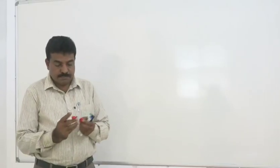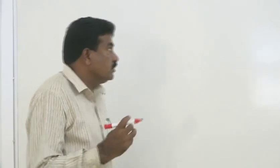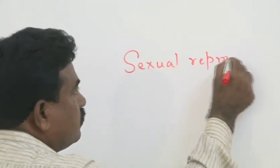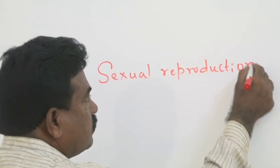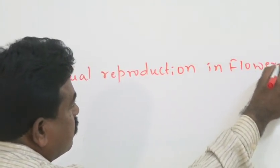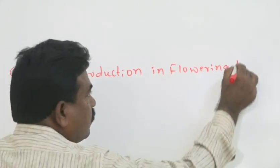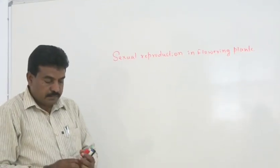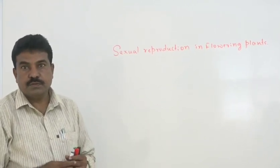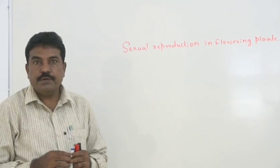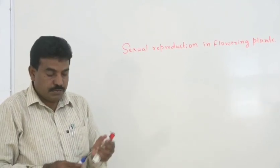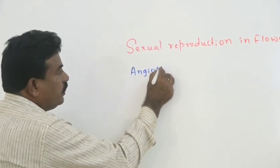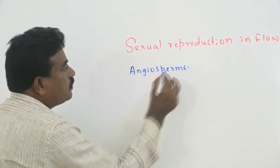Today, we have to discuss the chapter Sexual Reproduction in Flowering Plants. In the first topic, that is Reproduction in Organisms, we explained all reproductive events in general. But in this chapter, we have to discuss how the flowering plants, popularly known as angiosperms, reproduce bisexually.